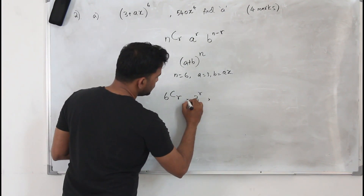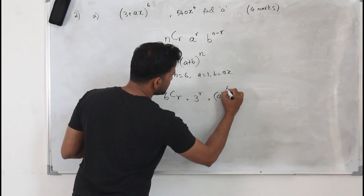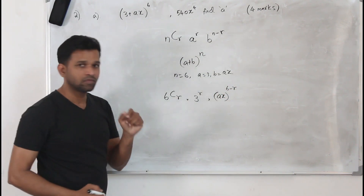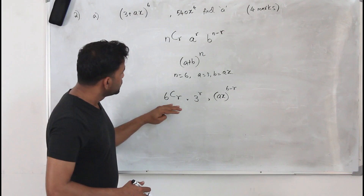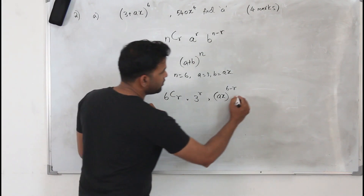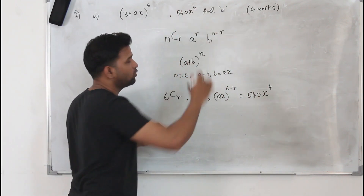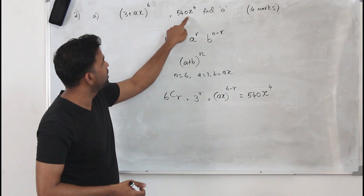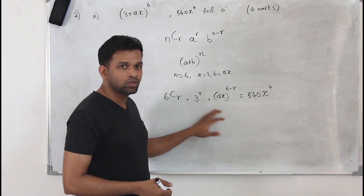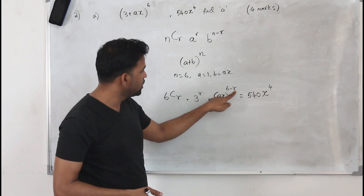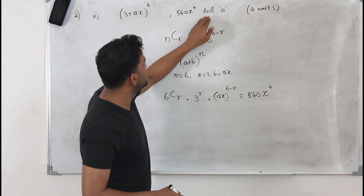So the nth term formula for this particular binomial expansion gives us a term equal to 540x^4. By comparing these two expressions, we can find the value of r. Once we have r, we can find the value of a easily, which is our objective.